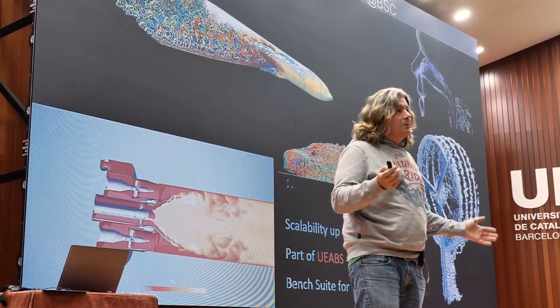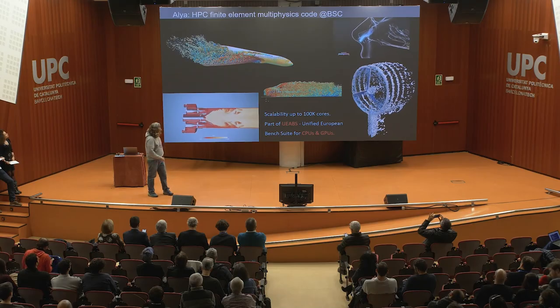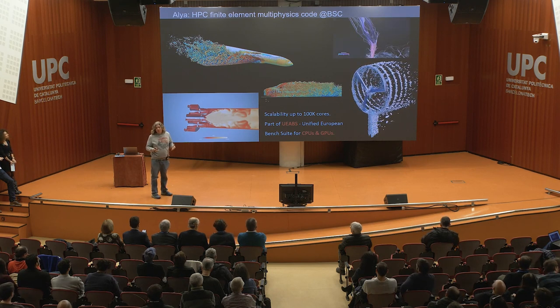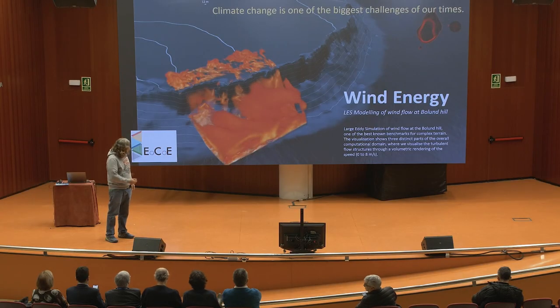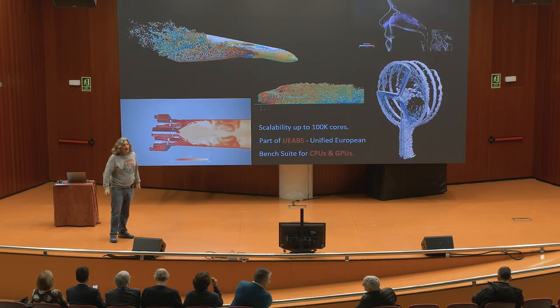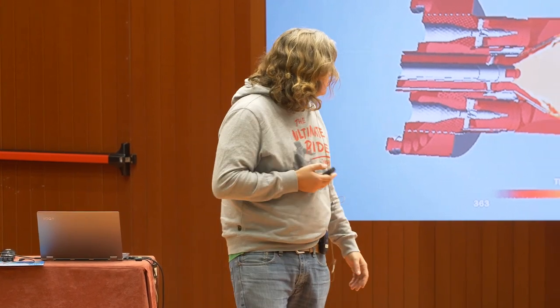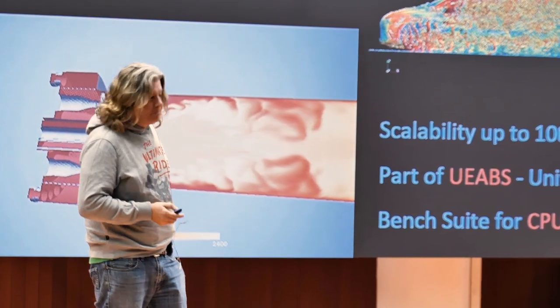I guess that several of you have already seen things about Alya. It is a multi-physics simulation code developed at Barcelona Supercomputing Center. It's multi-physics, but perhaps the most common simulations are fluid dynamic simulations, as the ones you see here. It has been proven to scale up to 100,000 cores. Even in production, it runs for 24 hours on MareNostrum, and it is part of the unified European benchmark suite for both CPUs and GPUs.